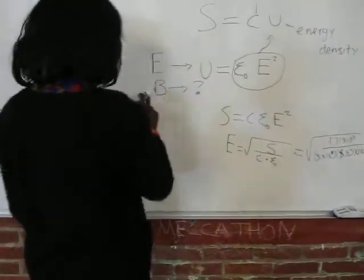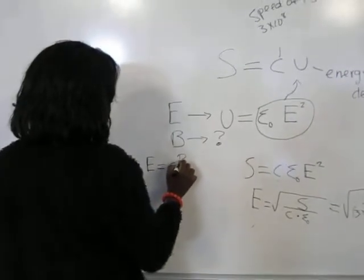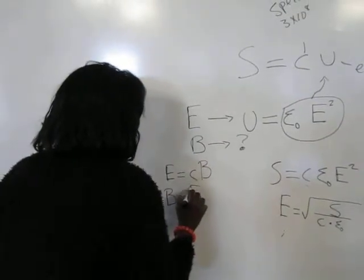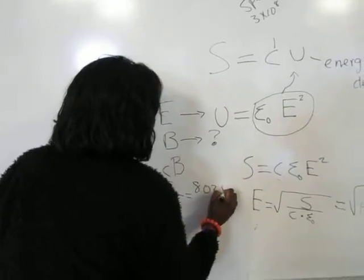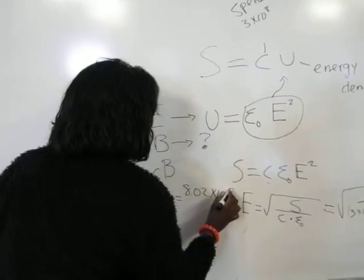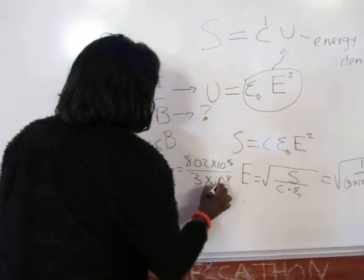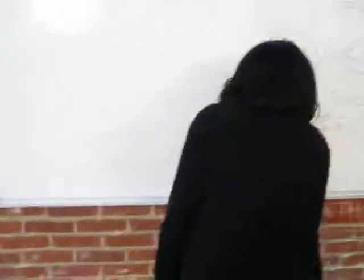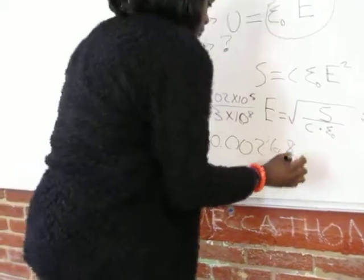These two are related by electric field equals speed of light times magnetic field. We have the electric field now, so the magnetic field equals the electric field divided by the speed of light, which is 8.02 times 10 to the 5 divided by 3 times 10 to the 8. The magnetic field equals 0.00268 tesla.